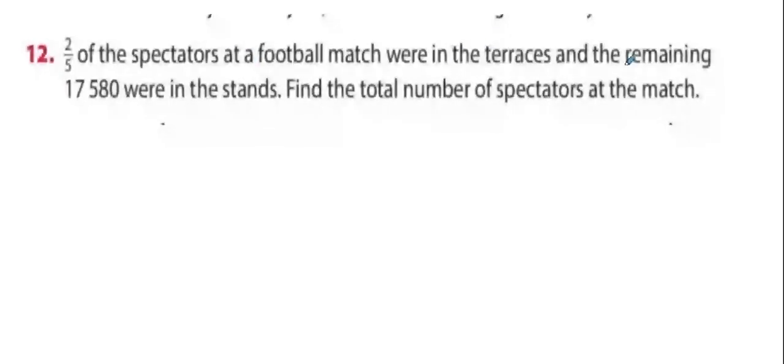Two-fifths of the spectators at a football match were in the terraces. That means two parts were in the terrace. And five parts total. How do I know there's five parts in total?